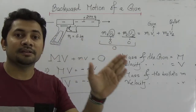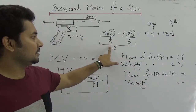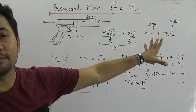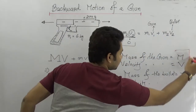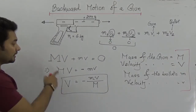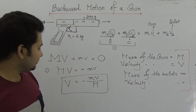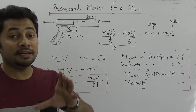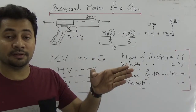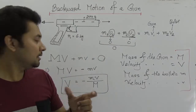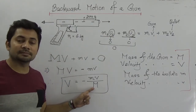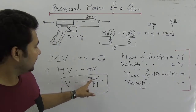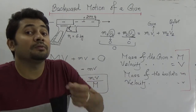Initially, both the gun's and bullet's velocity are zero, so the whole sum is zero. We don't need to use M1 and M2 labels; we simply use capital M and capital V for the gun, and small m and small v for the bullet, and set up the equation. From this equation we can easily find any mathematics related to guns and bullets. Capital M is the mass of the gun, capital V is the velocity of the gun, small m is the mass of the bullet, and small v is the velocity of the bullet.